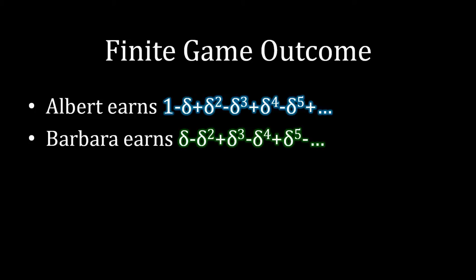With six periods you get 1 minus delta, plus delta squared, minus delta cubed, plus delta to the fourth, minus delta to the fifth. If you keep adding more and more periods it's going to keep oscillating back and forth. Similar story for Barbara. So we actually know what happens when we have an arbitrarily large — still finite — number of periods. You're just increasing the exponents one at a time and oscillating between adding and subtracting from the payoff.